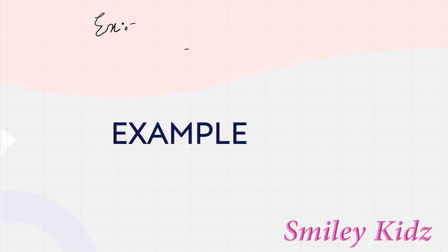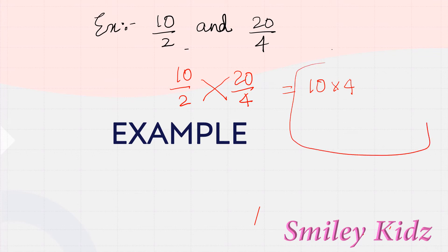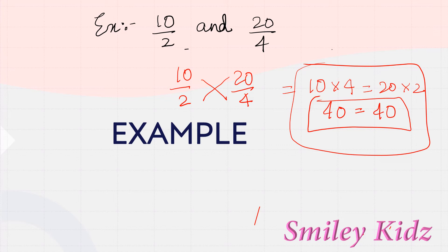Let's see an example. Take 10/2 and 20/4. How can we identify whether they are equivalent rational numbers or not? Apply the step — do cross multiplication. So cross multiply: 10 multiplied by 4 equals 20 multiplied by 2. 10 multiplied by 4 is 40, and 20 multiplied by 2 is 40. So LHS equals RHS: 40 equals 40. Therefore, these are equivalent rational numbers.